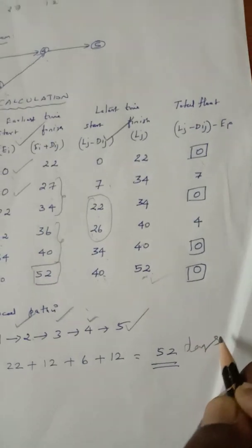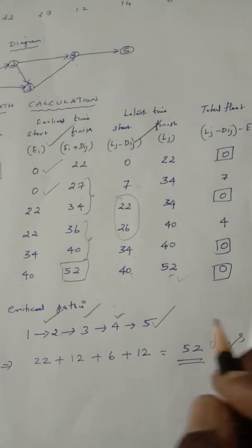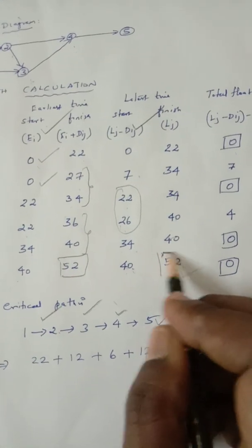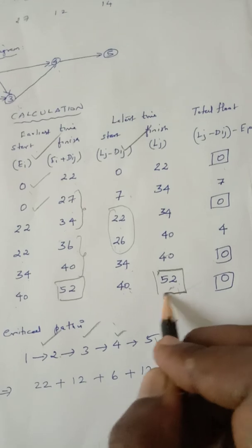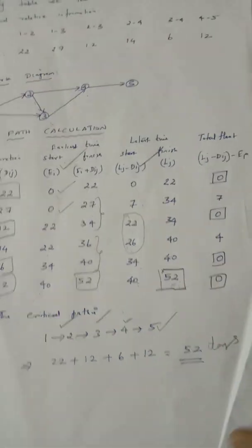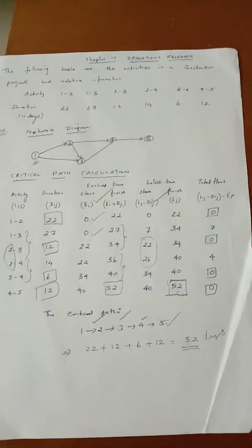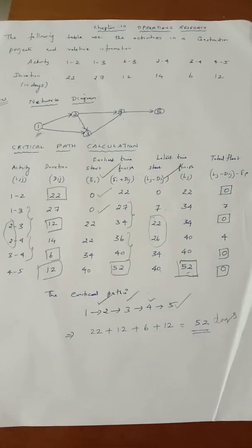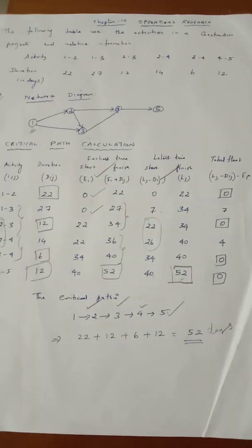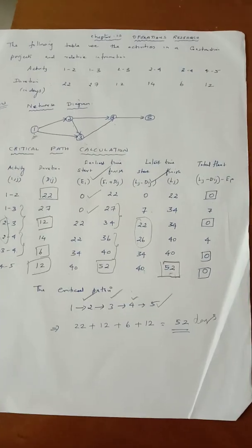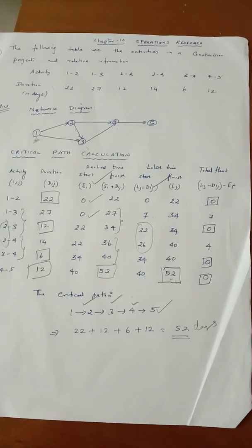The answer is confirmed. The critical path calculation gives a total project duration of 52 days along path 1→2→3→4→5.